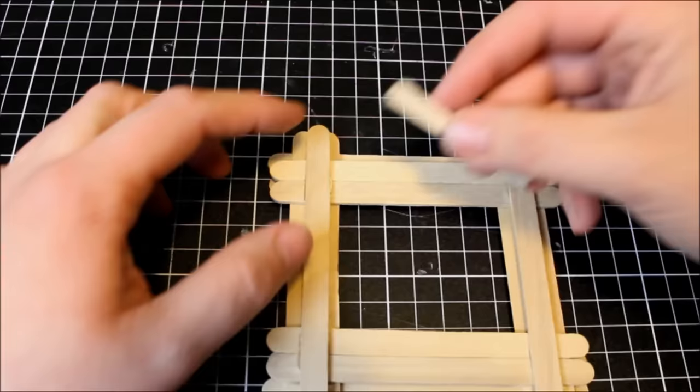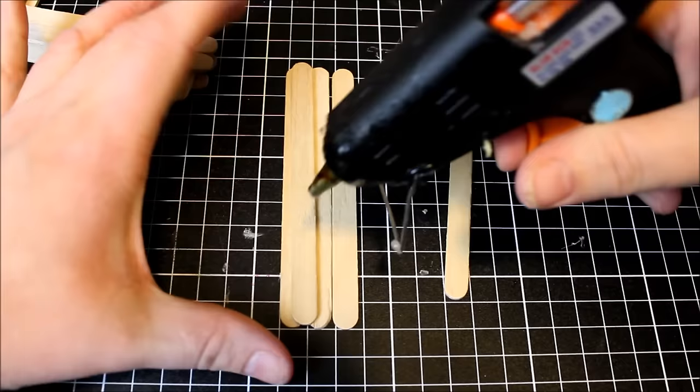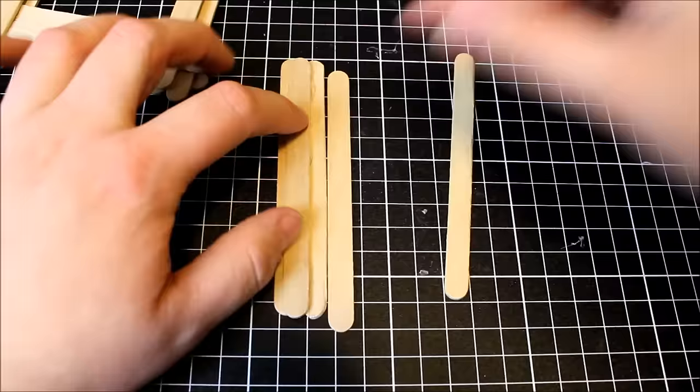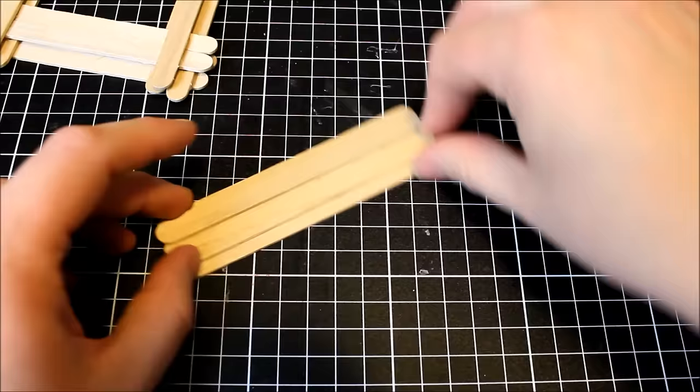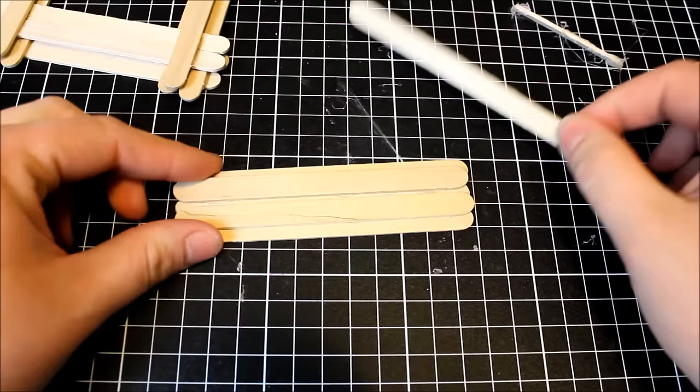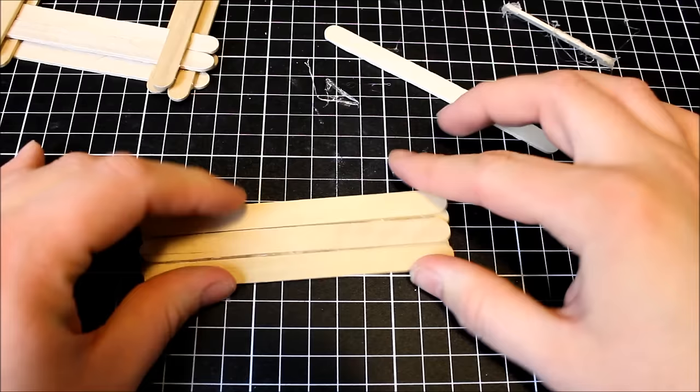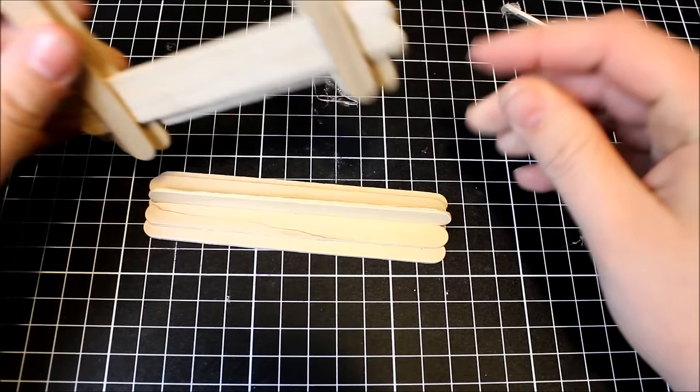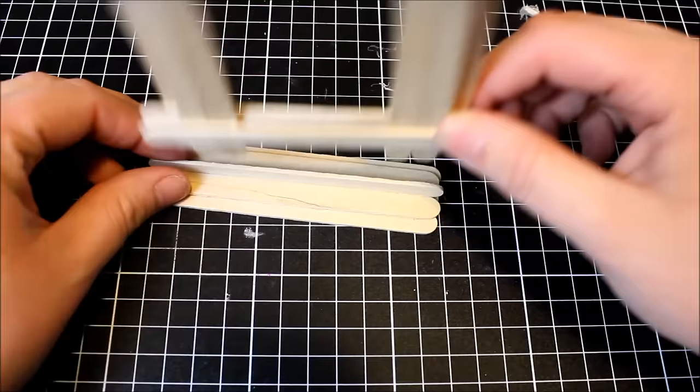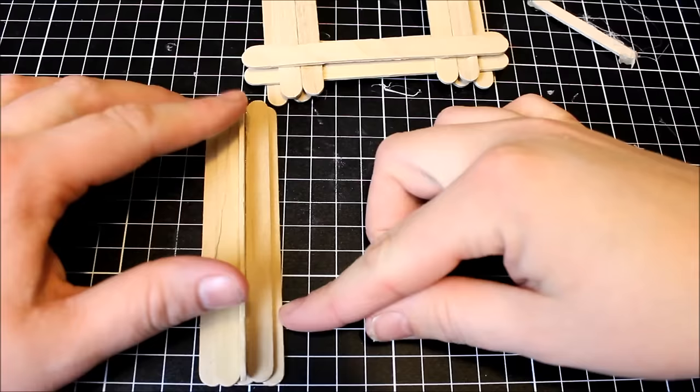Once you're happy with how your frame looks go ahead and build the base by laying down three craft sticks close together and adding a second layer overlapping the joins like you can see here. Using a little bit of hot glue on that stick and placing it directly over the join of the two. With your second layer you want to have a little gap in between the two sticks there as you can see and you can insert another stick inside. It makes like a little track for it to sit in perfectly. Go ahead and add some more glue to that track and insert that stick back in there to secure it in place.